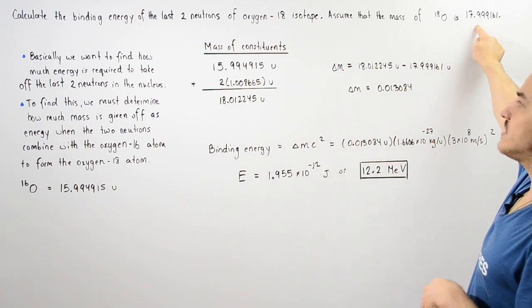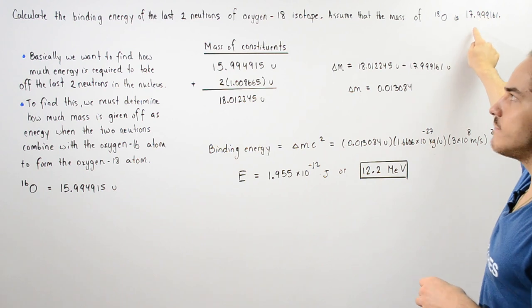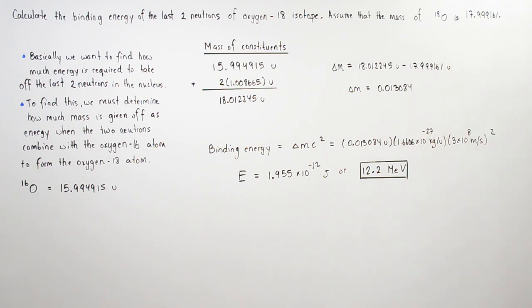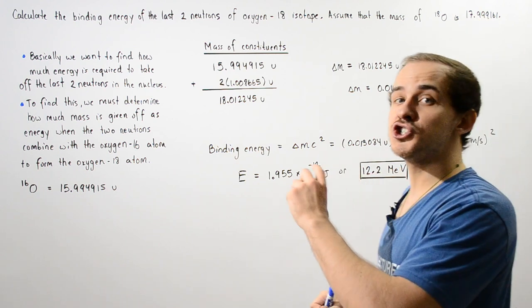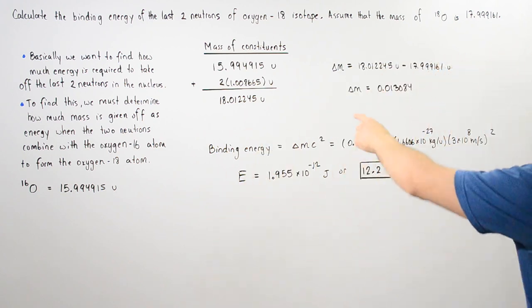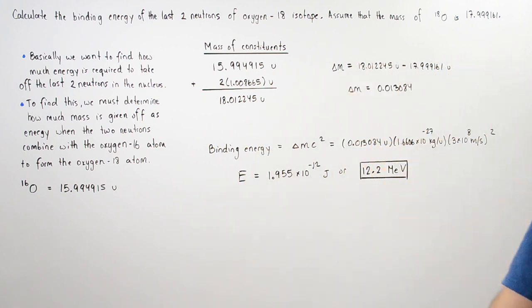But we know that this is the actual mass of our oxygen-18 isotope, and there is a change in mass. There is a discrepancy. Let's find what the change in mass is.